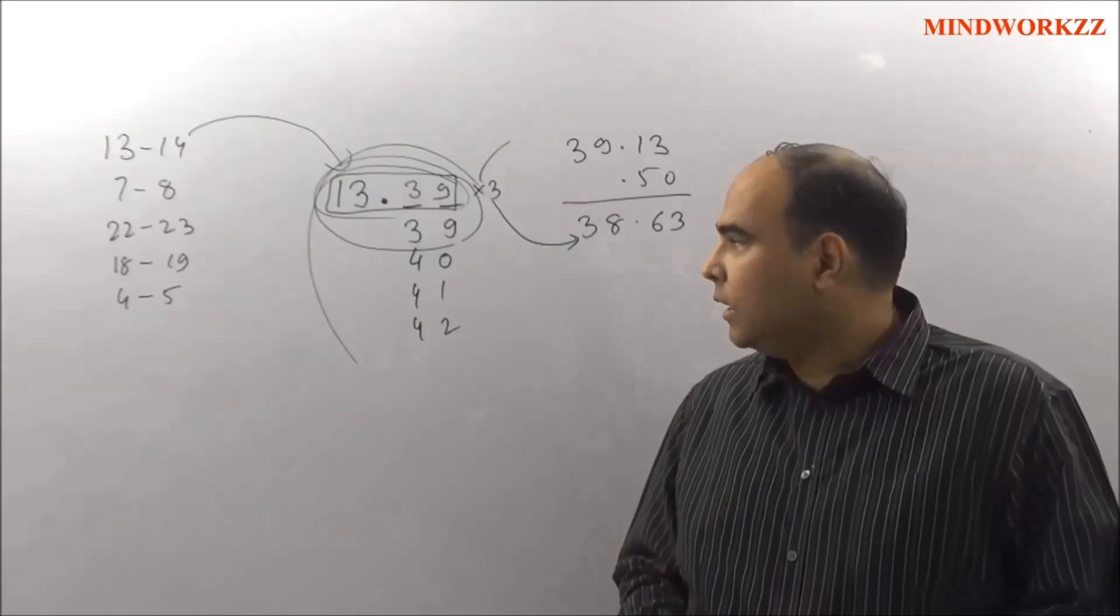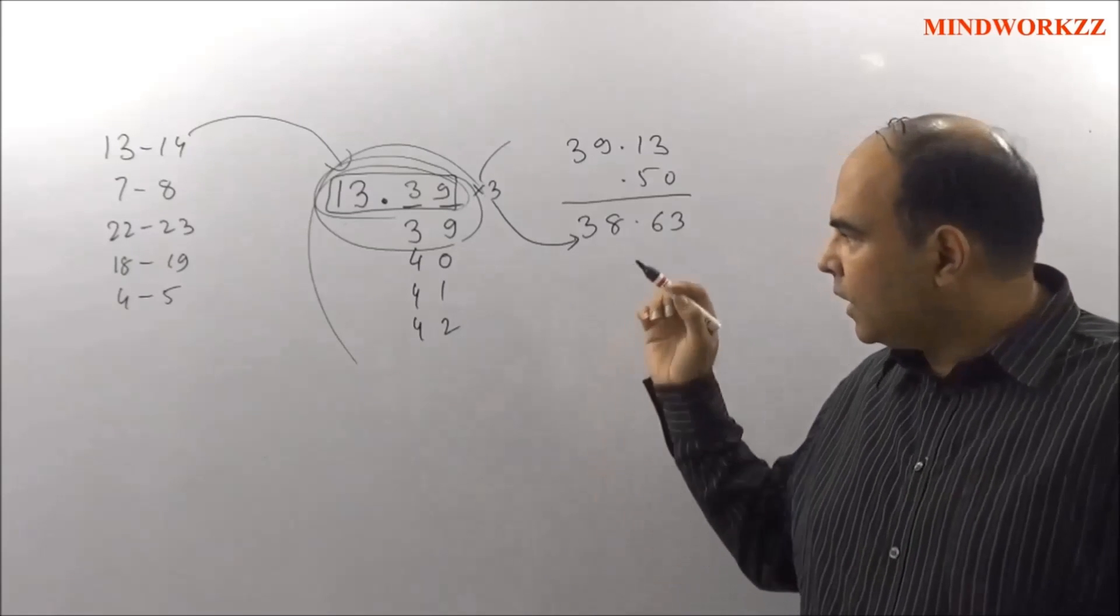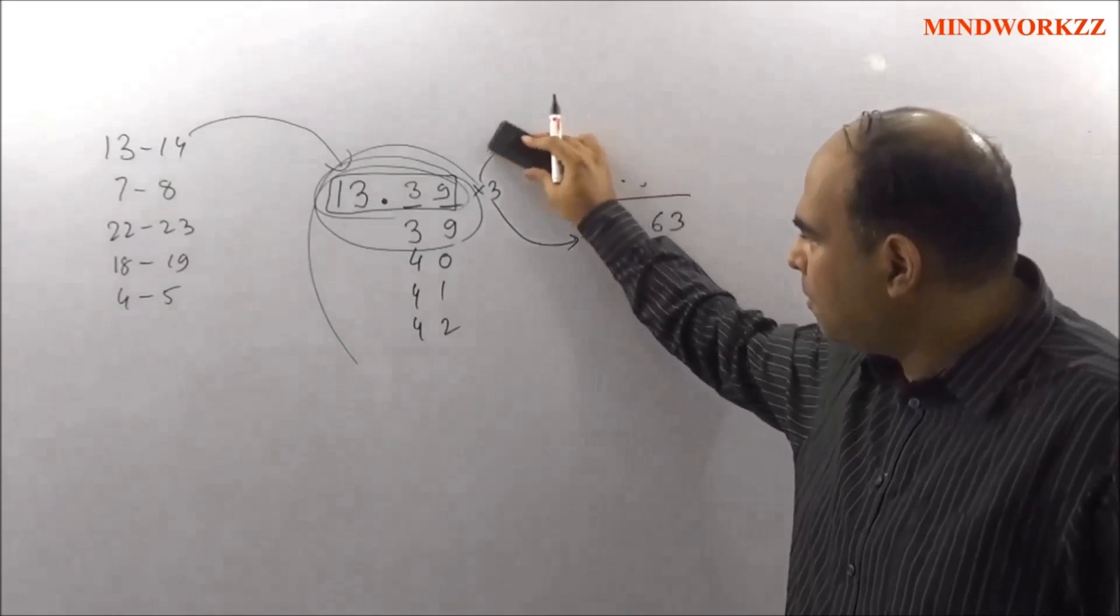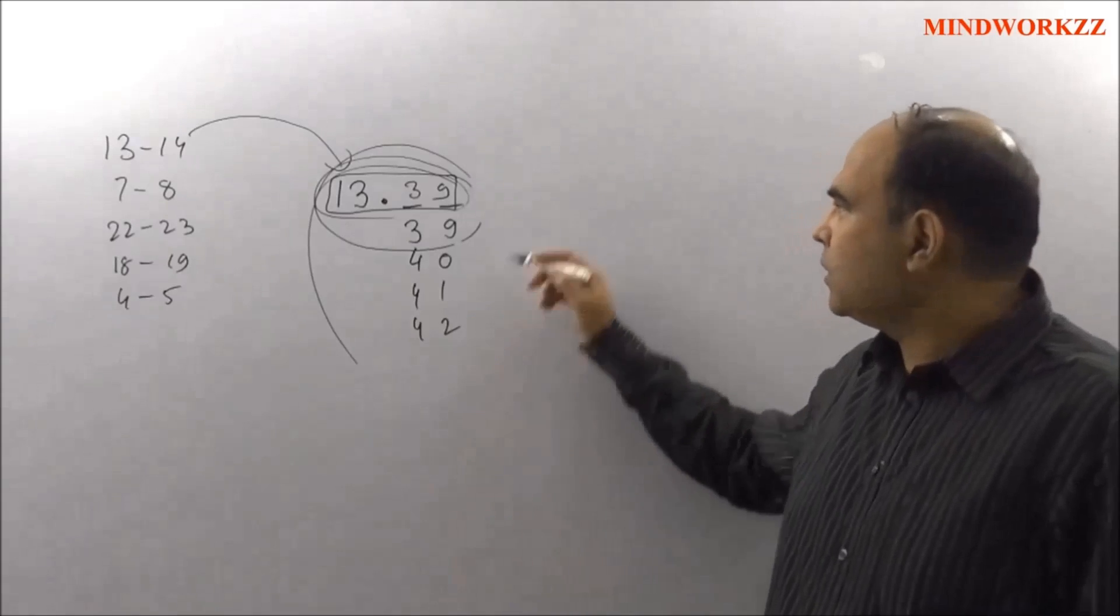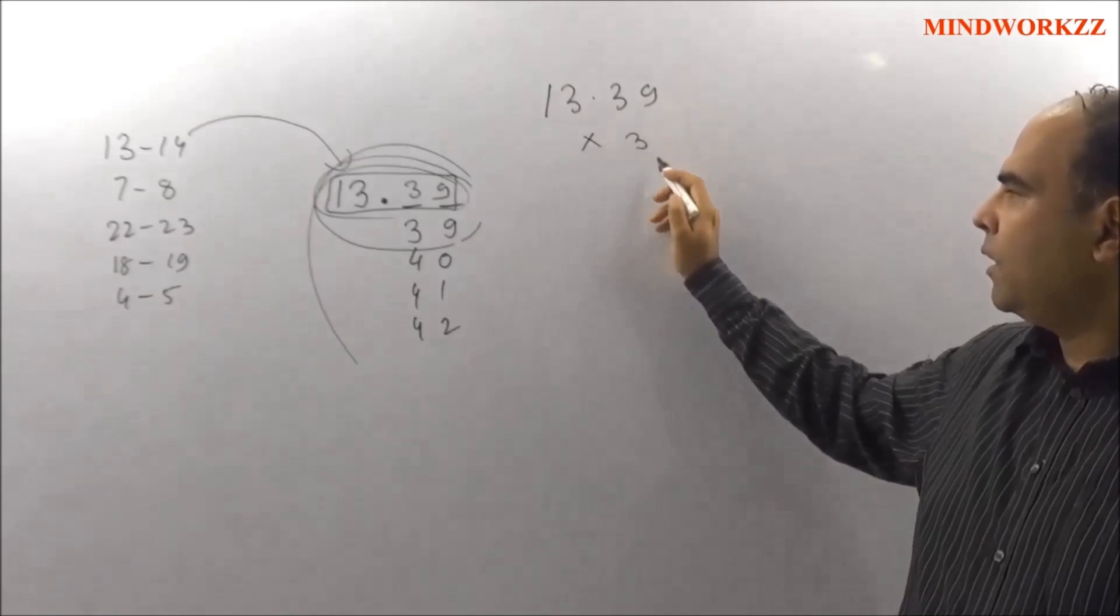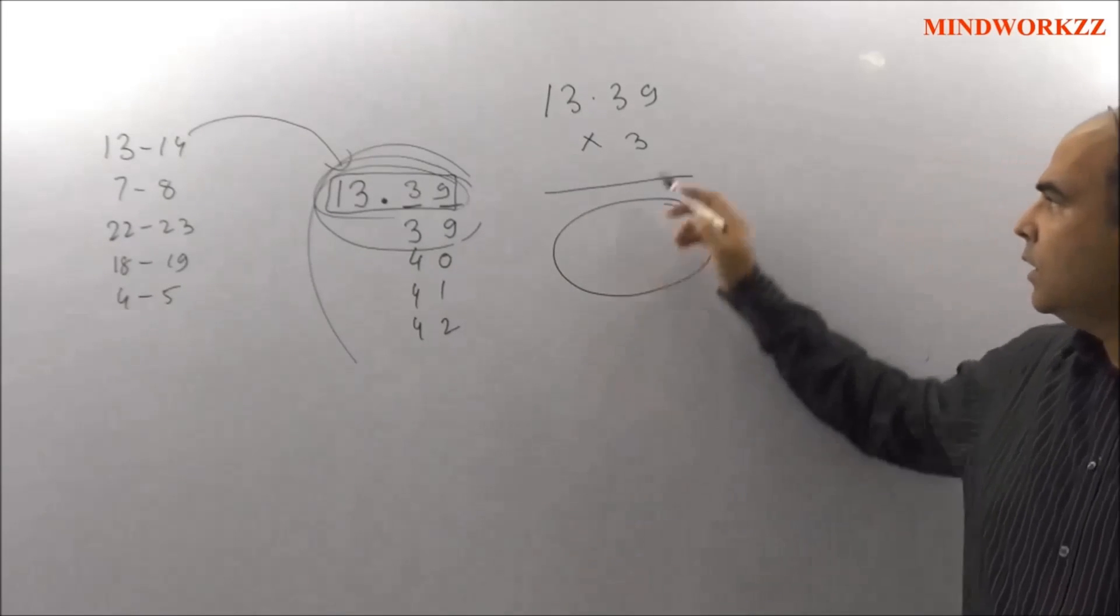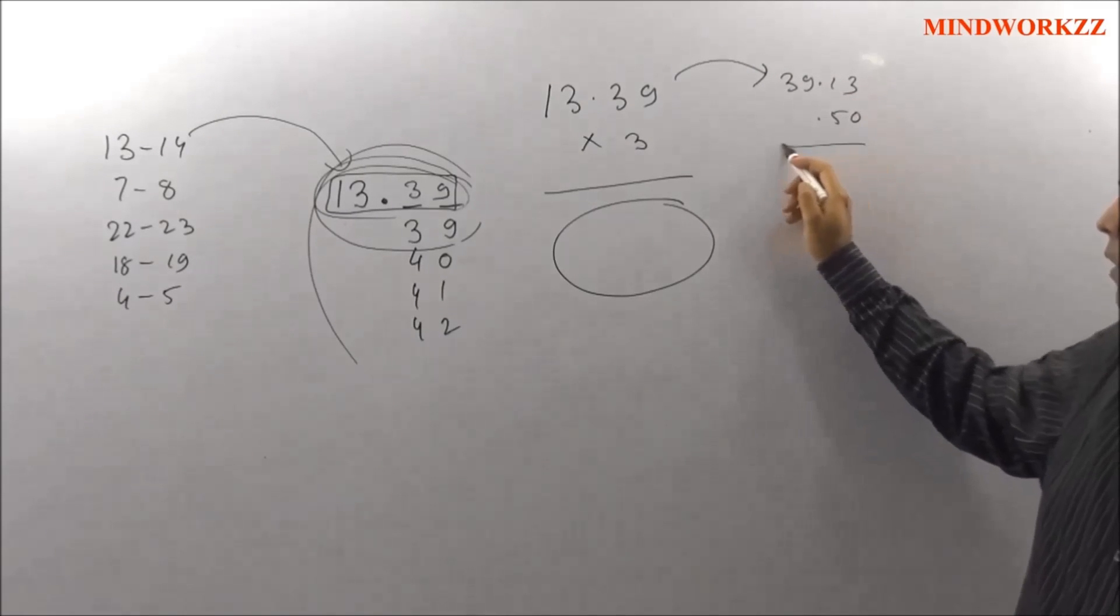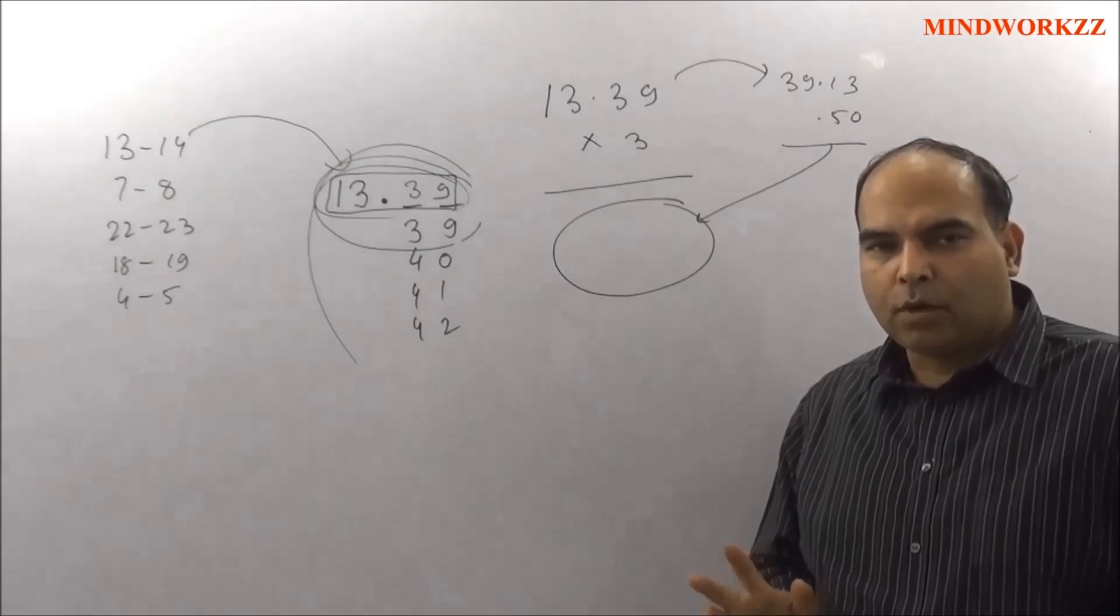Now obviously this is not the right answer then. Then you start checking 13.40, 13.41, but rather than going blindly about it, if you start analyzing what has happened, you can start to look at a completely different way of looking at this option check. And that way is that if you look at 13.39 and you triple it, you get a value. The problem is telling us that if I transpose this to 39.13 and then subtract, I should get the same value. Subtract 50 paise, I should get the same value. That's what it is saying.